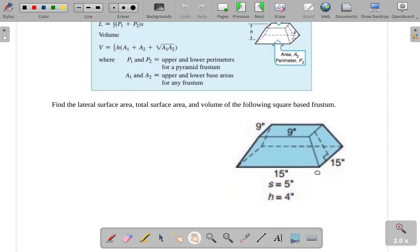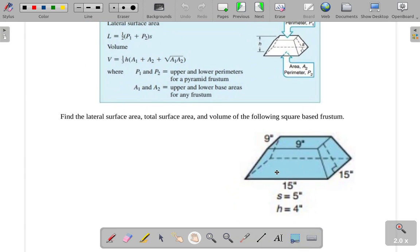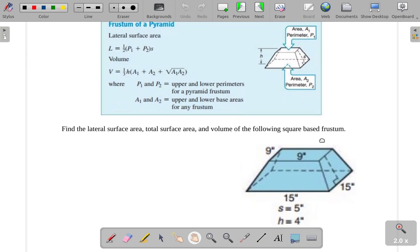All right, so find the lateral surface area, the total surface area, and the volume of this square-based frustum. Okay, well, it looks like we're going to need to find those things. L, the lateral surface area, is 1/2 times P1 plus P2 times S. So P1 and P2 are the perimeters of my two bases. Since I have two bases, I'm actually going to draw them both up.